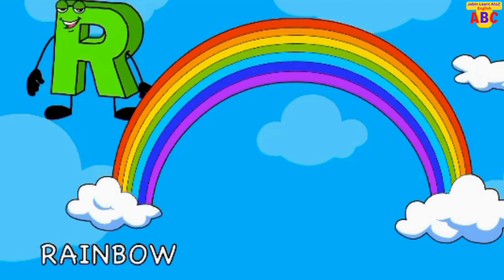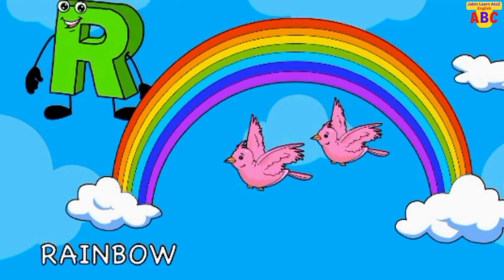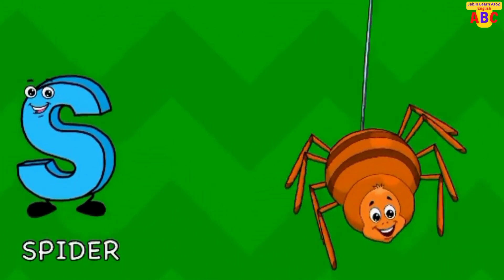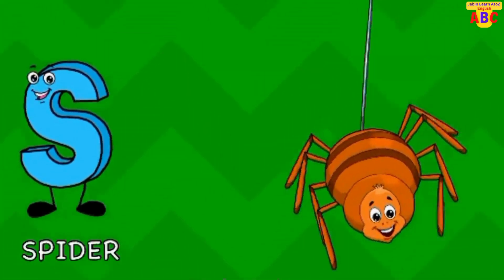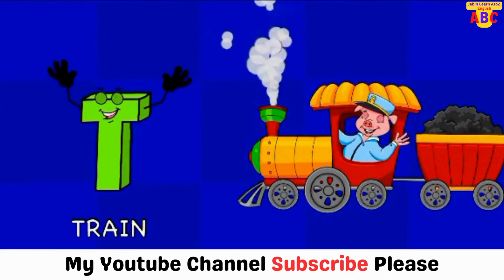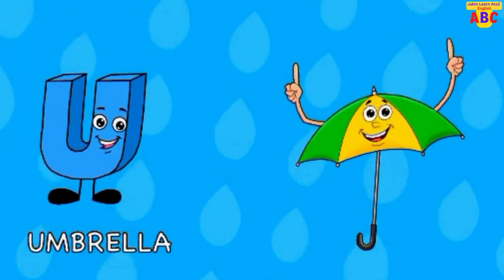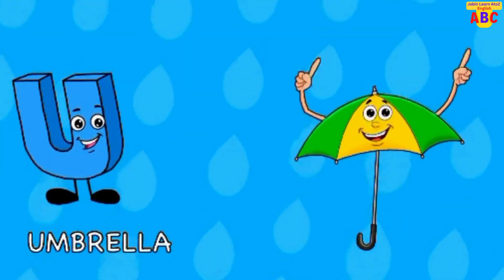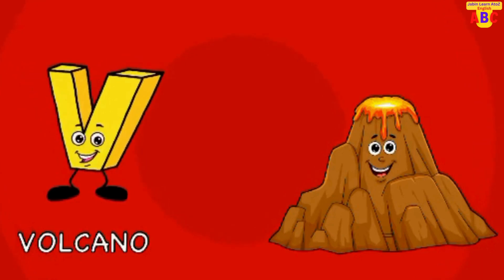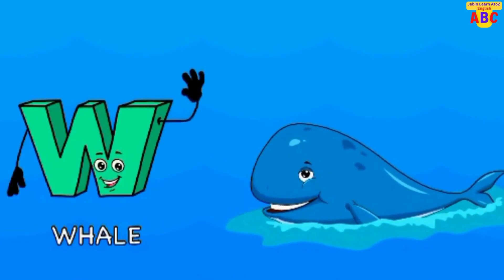R for Rainbow. S for Spider. T for Train. U for Umbrella. V for Volcano. W for Whale.